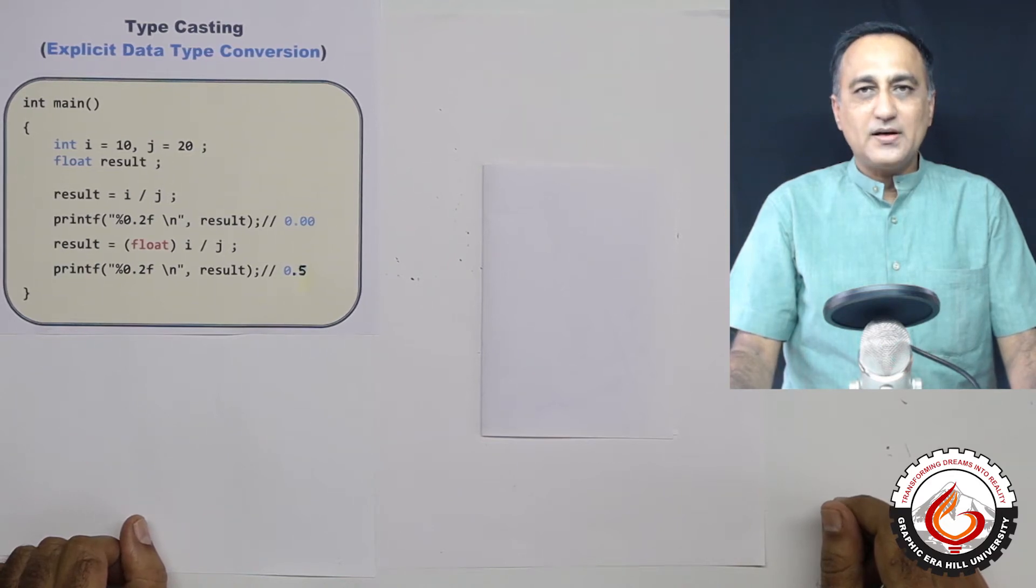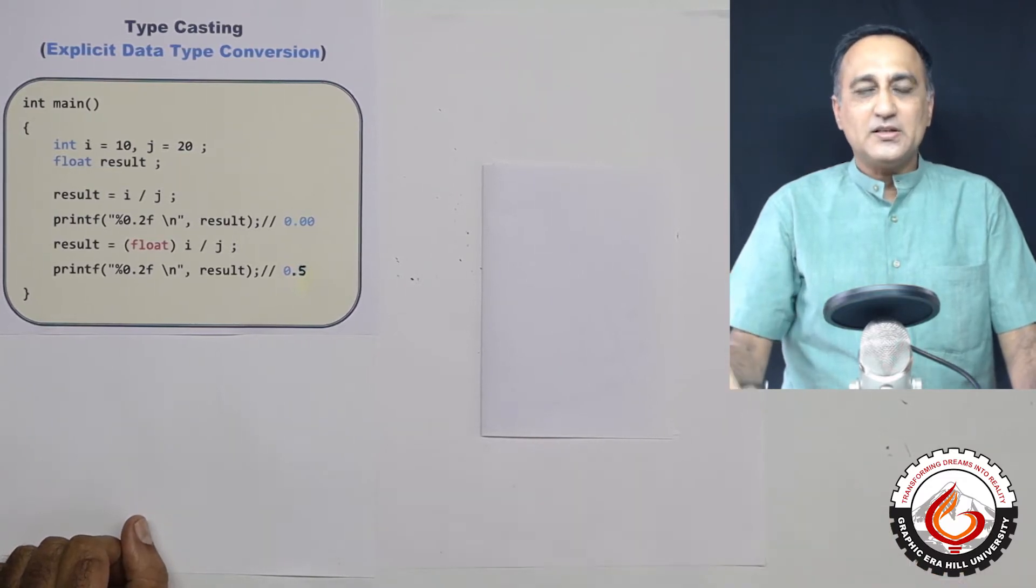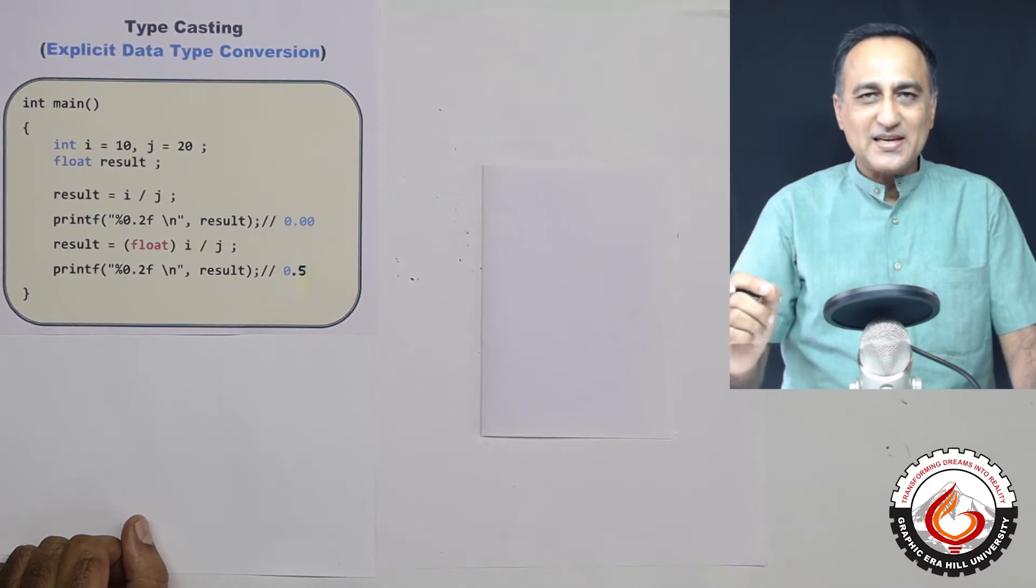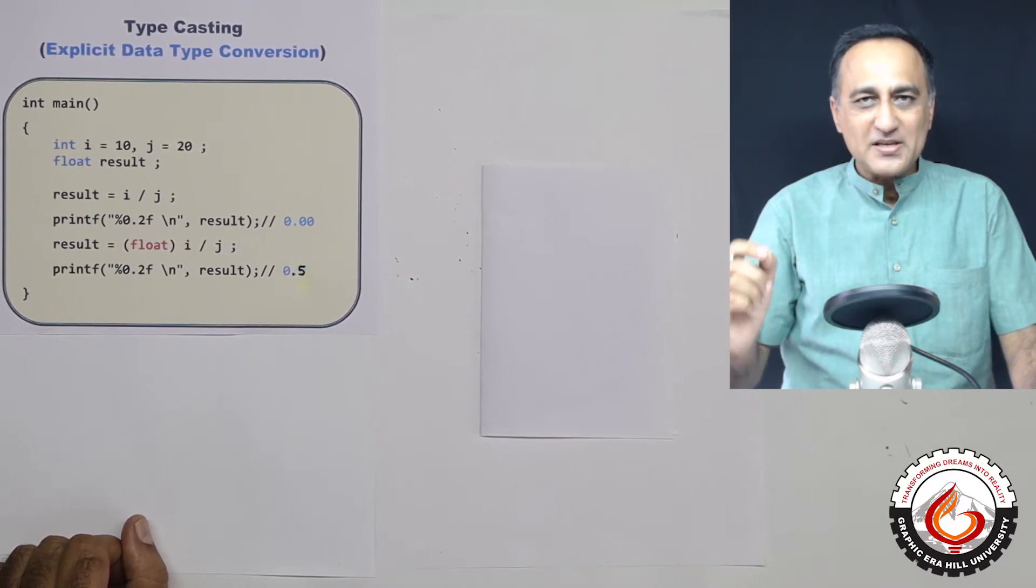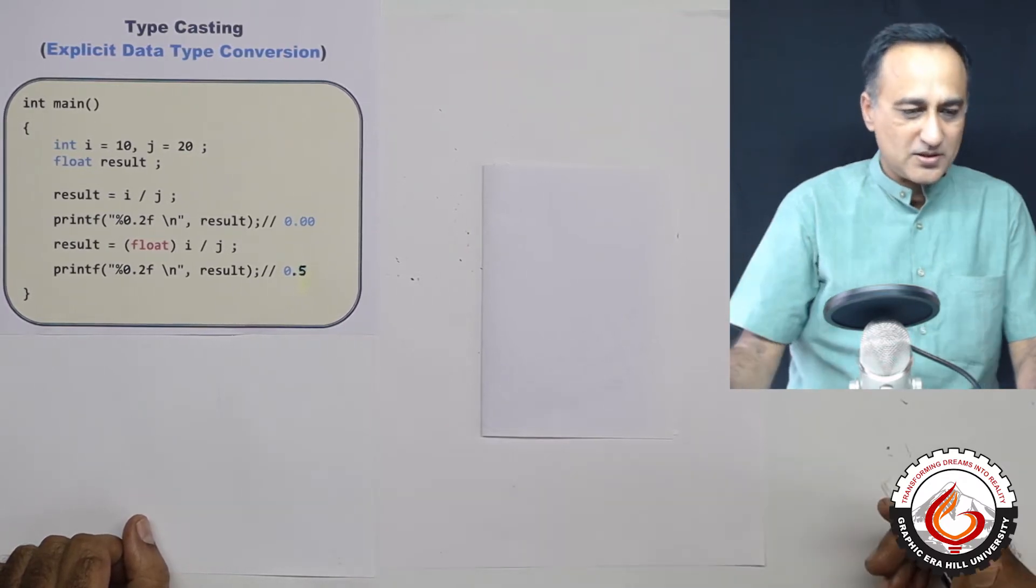The next type of typecasting is, as you must have already guessed it, the opposite of implicit, which is explicit. The word explicit means the programmer himself says forcibly or please convert this lower data type into the upper data type or upper data type into lower data type or whatever it is.